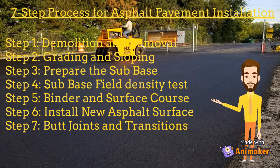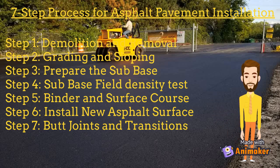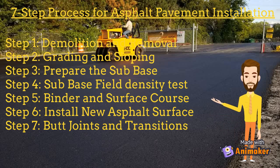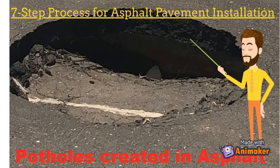Step 1: Demolition and Removal. Step 2: Grading and Sloping. Step 3: Prepare the Sub Base. Step 4: Sub Base Field Density Test. Step 5: Binder and Surface Course. Step 6: Install New Asphalt Surface. Step 7: Butt Joints and Transitions. To complete the project, Final Roll.